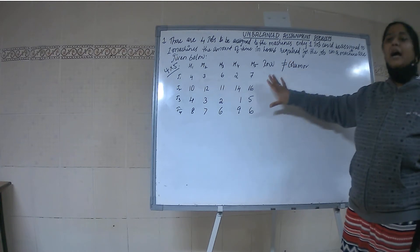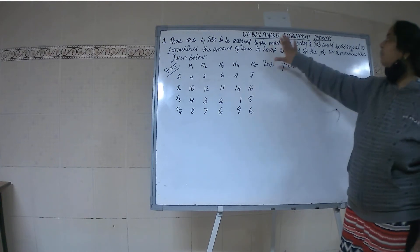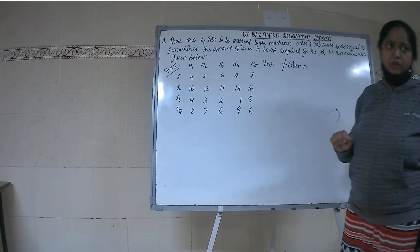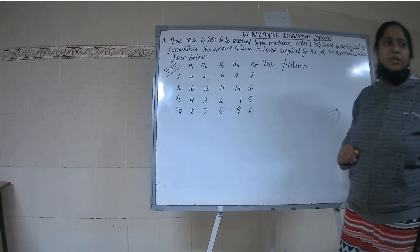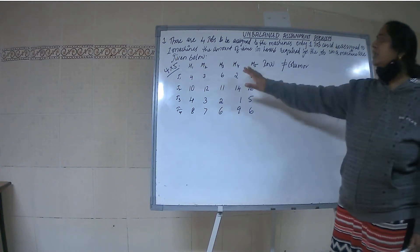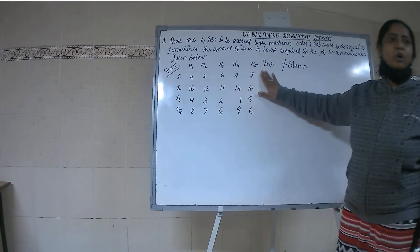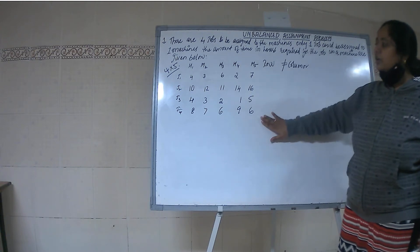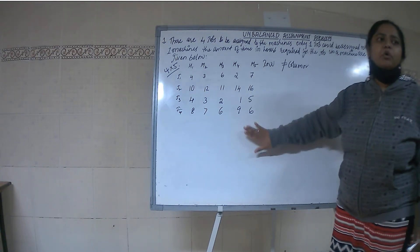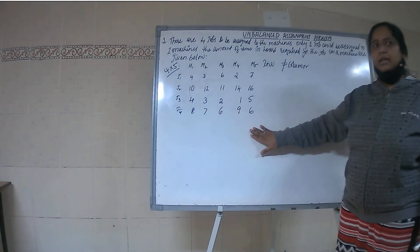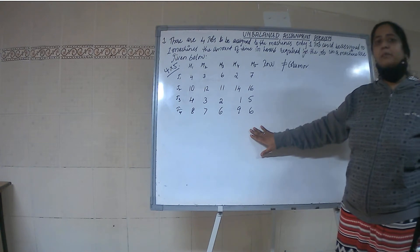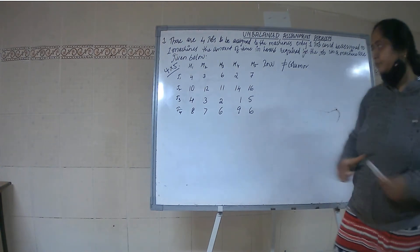So first you have to convert it into balanced assignment problem. How do you convert into balanced assignment problem? By adding a dummy row or a dummy column to balance it. You can see there are 5 columns here and 4 rows, so you need to add 1 more row to make it a square matrix. The dummy values are zeros.